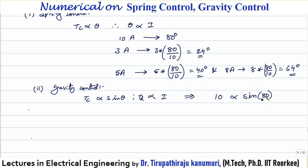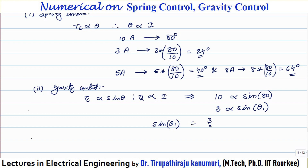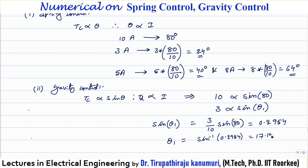For some other current, the angle theta satisfies: I is proportional to sin theta. Taking the ratio of the equations, sin theta₁ equals (3/10) times sin 80°. Substituting gives 0.2954, so theta₁ equals sin⁻¹(0.2954), which is 17.18 degrees for 3 amperes.